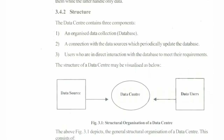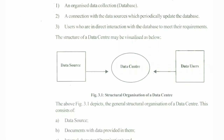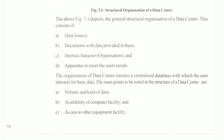Now let's talk about the structure of the data center. There are three components: an organized data collection called the database, which is connected with the data source and periodically updated, and users who are in direct interaction with the database to meet their requirements. There is a data source from where data is passed to the data center.